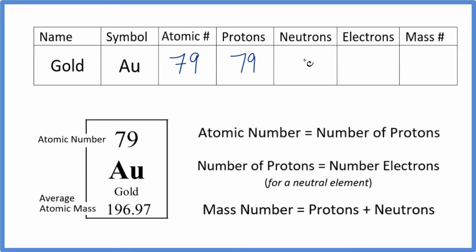When we look at neutrons, we can figure neutrons out because the mass number equals the protons plus the neutrons. This is the average atomic mass, so we're going to round this up to 197. We round this to a whole number.